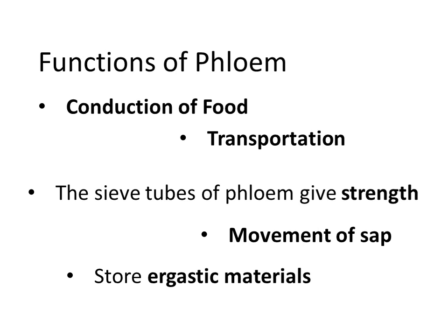Phloem parenchyma can also store ergastic material like resin and latex. To sum up, phloem is a complex tissue containing four types of cells: sieve cells, companion cells, phloem parenchyma, and phloem fibers. Its main functions are conduction of food, transportation, providing strength, movement of sap, and storage. That is all about the phloem and its components.